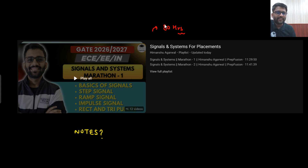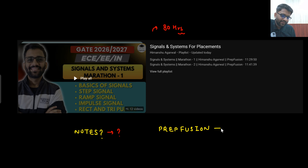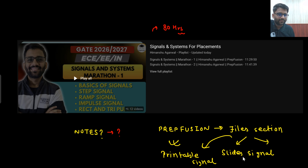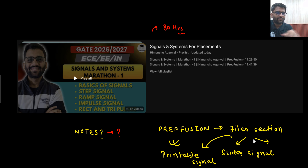Before the strategy, a common query is: where will I get the notes? For notes, you can join our Telegram group called 'Prep Fusion.' Go to the files section and search for two kinds of PDFs: type 'slides signals' for annotatable slides, or 'printable signals' for a white-background, black-text PDF you can print out. Notes problem is done — you don't need to make your own notes.